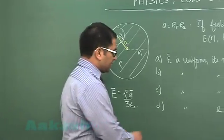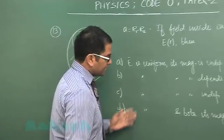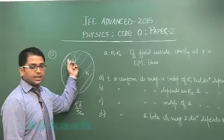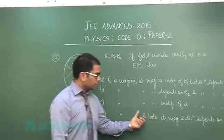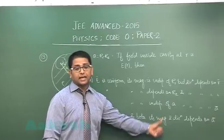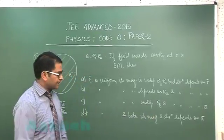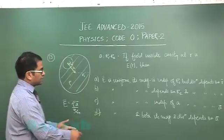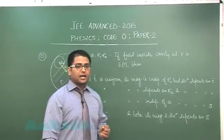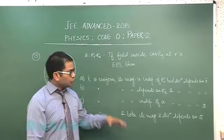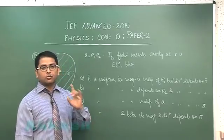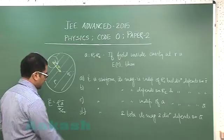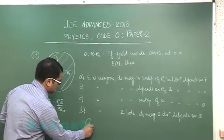This leads us to option D: E is uniform because everywhere inside the cavity the electric field is uniform in both magnitude and direction, and it depends on the vector a. Although this was from the multiple-option part, only one option is correct here. So question number 13 has the correct option as D.